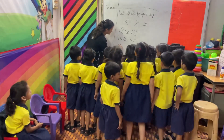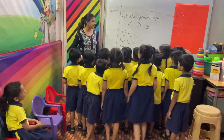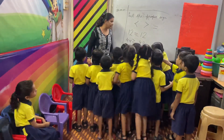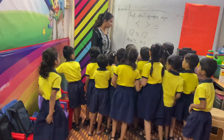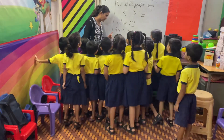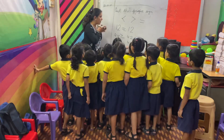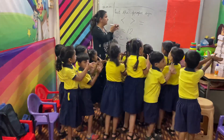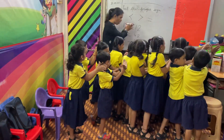Now the next is 39 dash 44. Which sign will come? Which is bigger — 39 or 44? 44 is bigger than 39. So which sign will come? We will open the face toward 44. Understood?